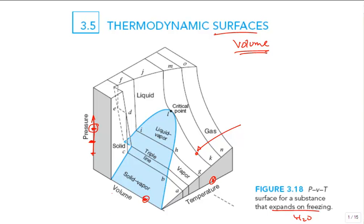We often use specific volume, which is an intensive property. With three intensive properties, any two fix the state. So knowing V and T, I can get P — but only one value of P, not a range. That confirms it is truly a surface.